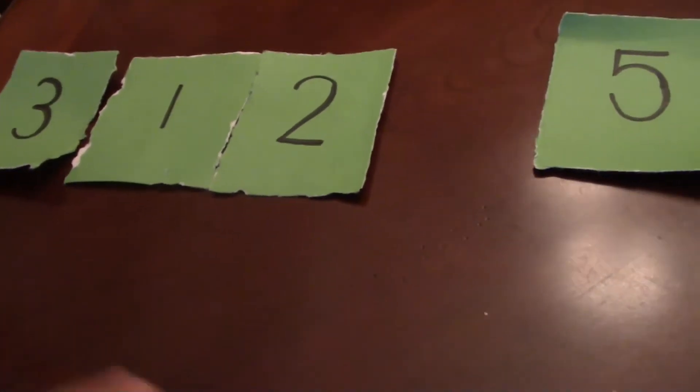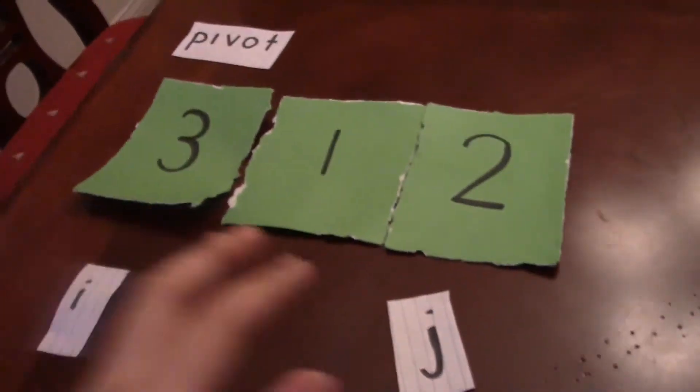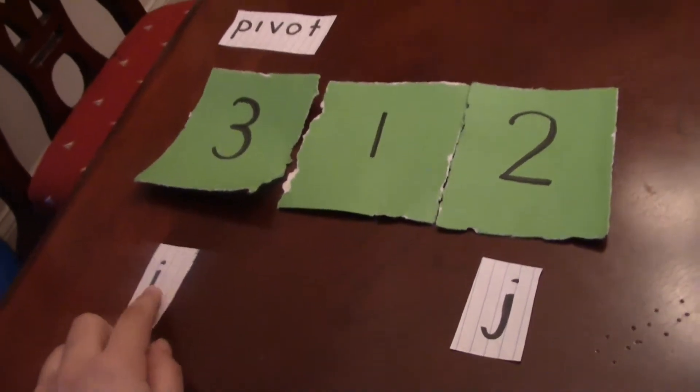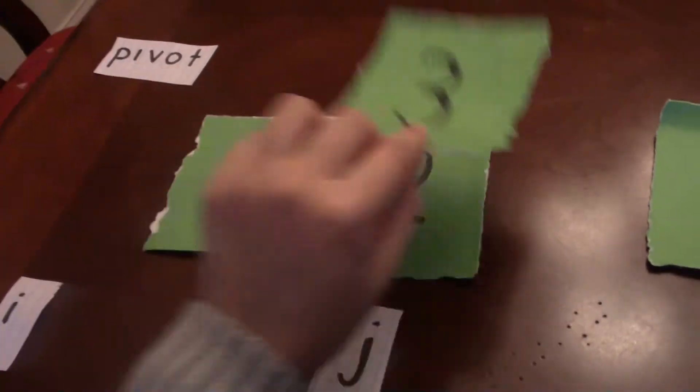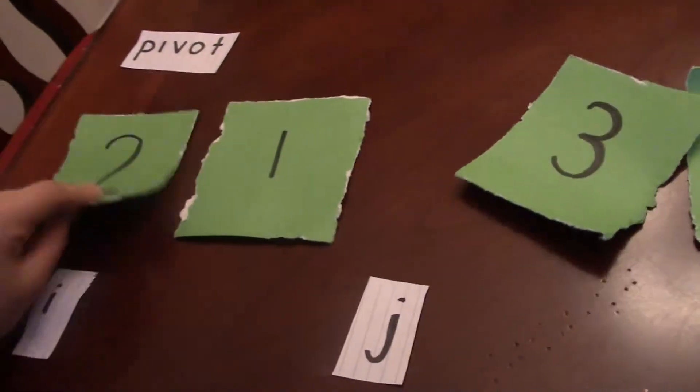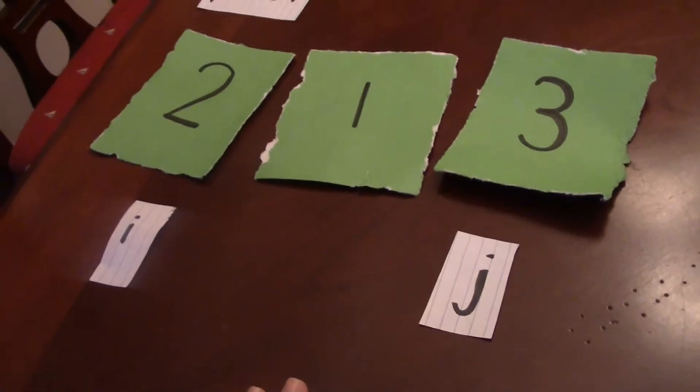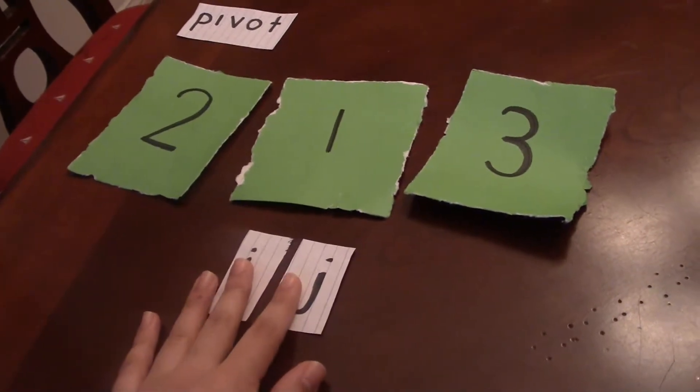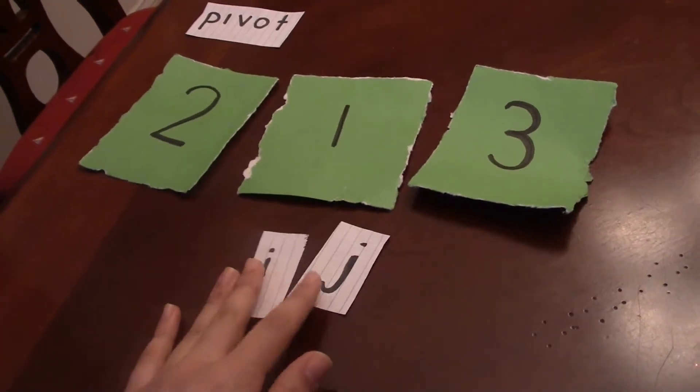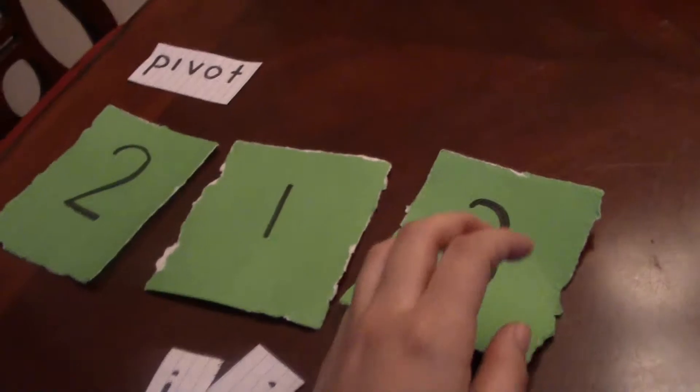So here now we're going to do this group over here. So we have a three, a one, and a two. I'm going to start our pivot over here like we did last time. So three is greater than two, so we're going to swap these. And then if we move these over our pivots are in the same spot so we just know we're done with this sort. So we know this one's good.